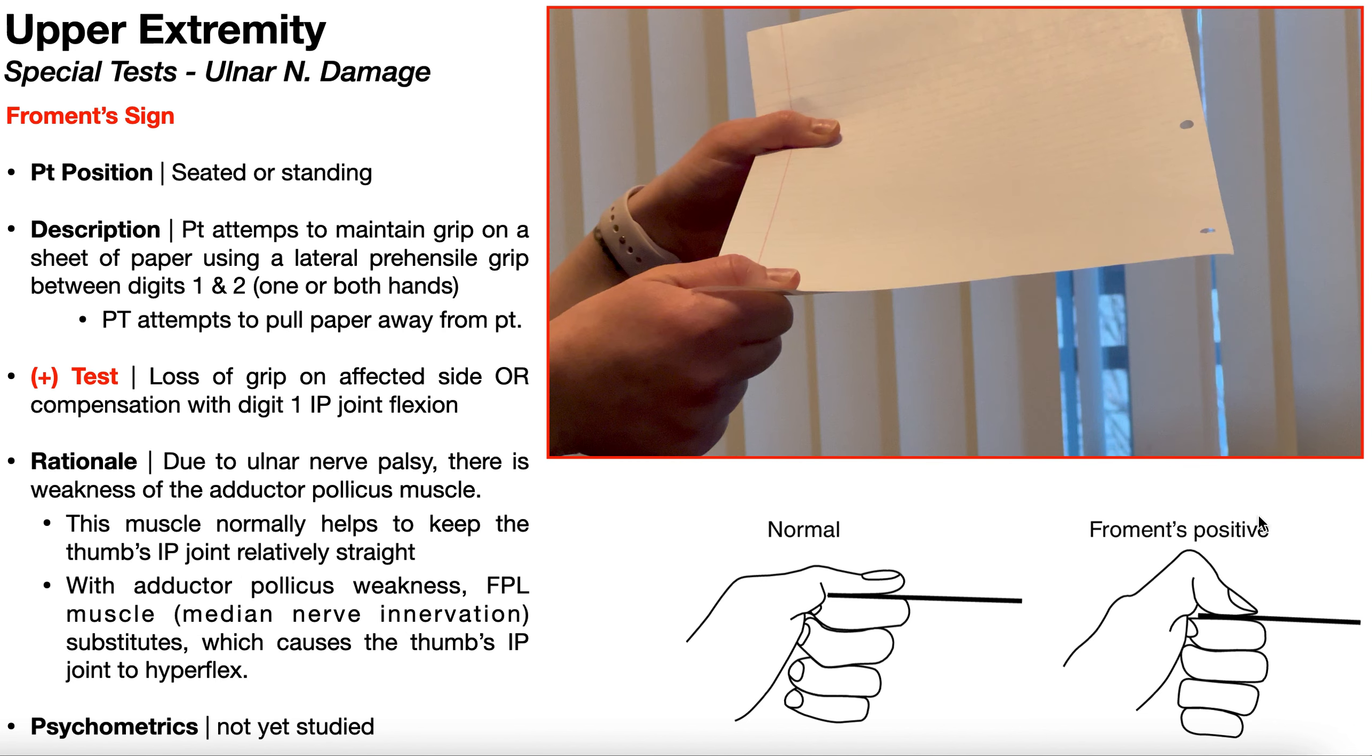Again, there's no loss of grip on the paper, and the lateral prehensile grip is maintained. Now, over here on the right side, you see a Froment sign, which is where even though the grip is maintained on the paper, there's a compensation or substitution by which you see massive flexion at the thumb's interphalangeal joint. And we'll talk about why that compensation occurs in a couple of minutes. This would be a positive test. So let's take a look at a positive test for Froment sign.